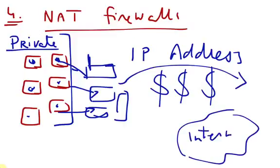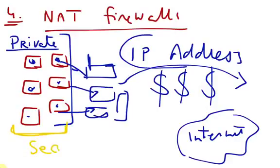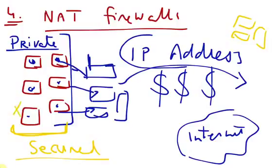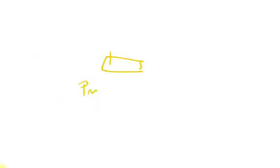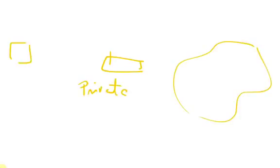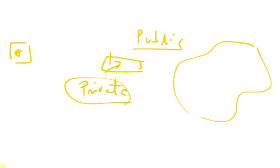Packets are sent to the internet based on that single public IP address. In this case the private addresses of the internal network are secured and an outside person or computer may not know the internal IP address of any PC. The firewall acts as a bridge — it screens the private IP addresses from being seen by external users, and it changes those private IP addresses into the public IP address when packets pass through it. Therefore the PCs on the internal network are secured.